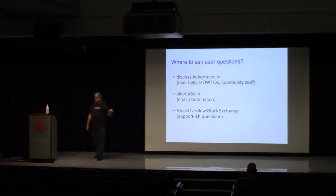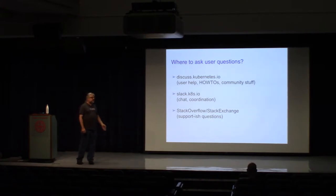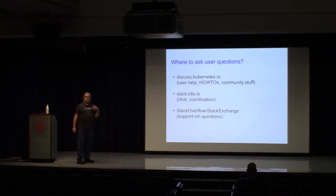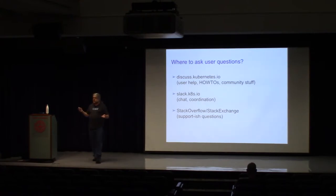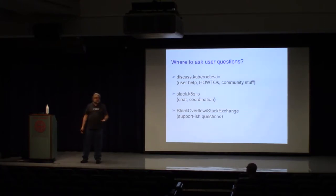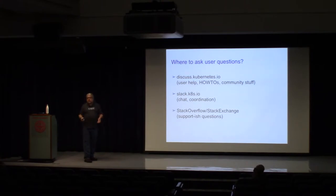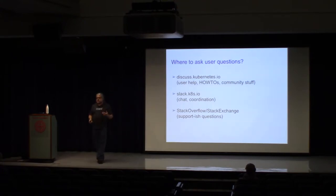We have a Discourse board called discuss.kubernetes.io — it's relatively recent, went up about four months ago, but we already have a whole section for contributing to Kubernetes, and it's also a good place to interactively discuss problems like comparing ingress controllers. For interactive chat, slack.kubernetes.io — we use Slack very heavily for both development coordination and user discussions. For support-type questions, we route those to Stack Overflow and Stack Exchange so the contributor forums don't get overwhelmed.